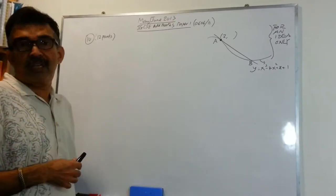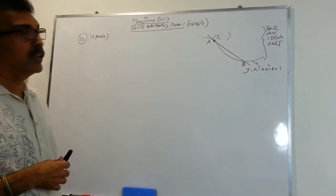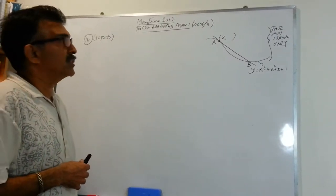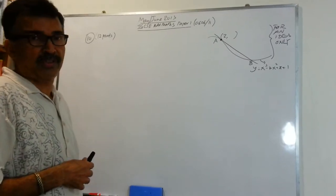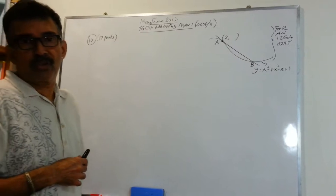It carries 12 points, 4 points each for 3 parts to this question. So a total of 12 points, and it involves coordinate geometry.